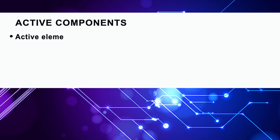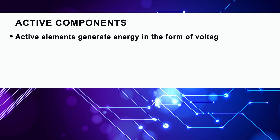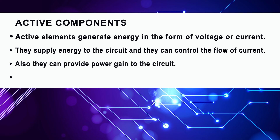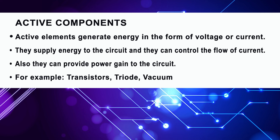Active components generate energy in the form of voltage or current. They supply energy to the circuit and they can control the flow of current. They can also provide power gain to the circuit. For example: transistors, triodes, vacuum tubes, voltage sources.